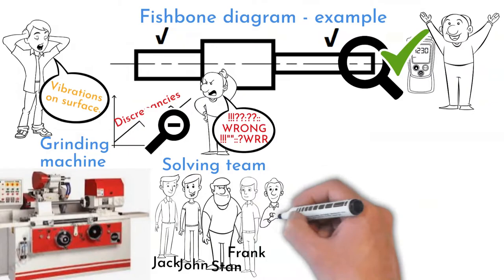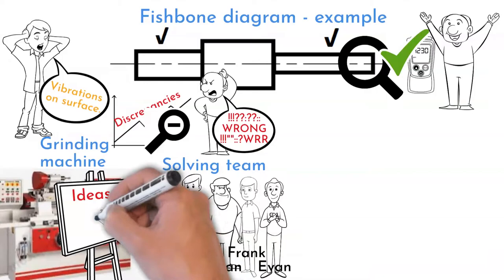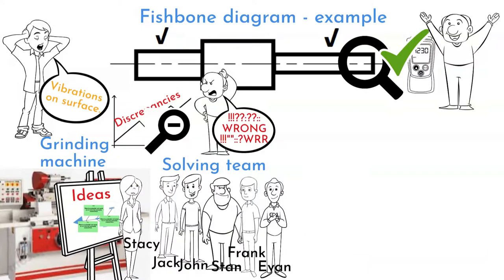maintenance guy, technologist, and machinist met next to grinding machine. They brainstormed and discussed potential causes of vibration problem. Green Belt lead this activity and made remarks on clipboard.